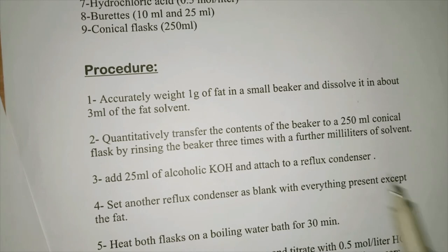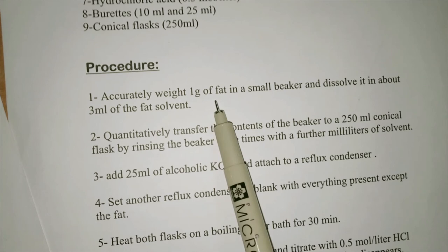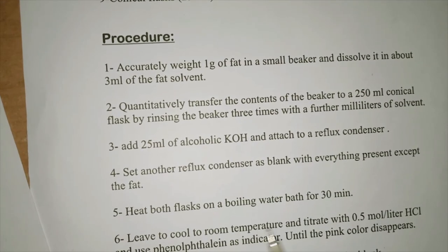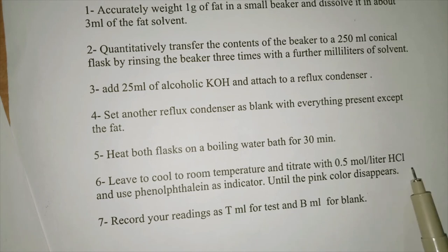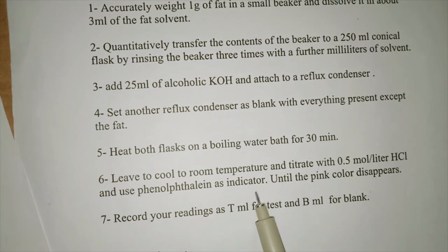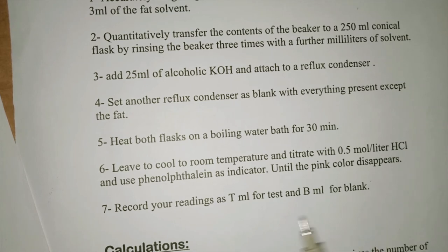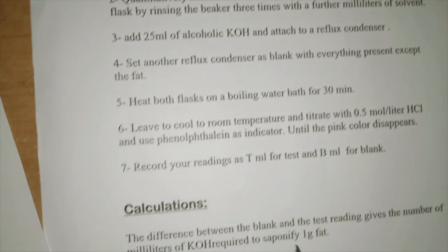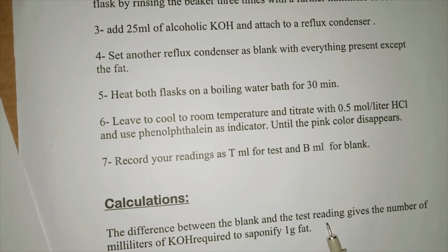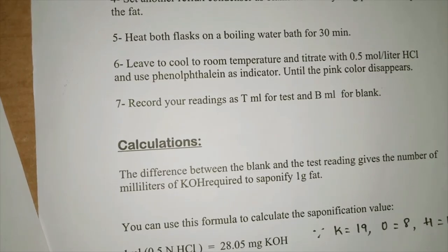After cooling, titrate against 0.5 mol/L HCl with phenolphthalein as indicator until the pink color persists. Record readings as T mL for the test and B mL for the blank. The test includes the fat; the blank does not. The difference between blank and test readings gives the number of milliliters of KOH required to saponify 1 gram of the fat.